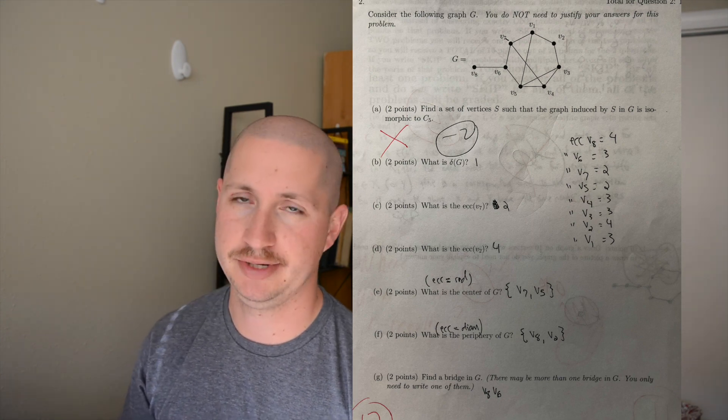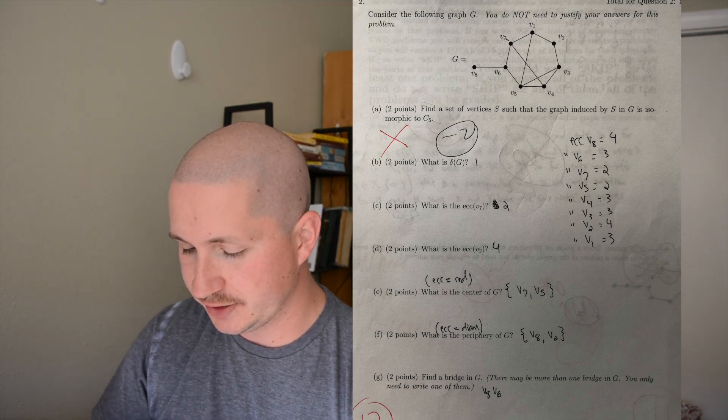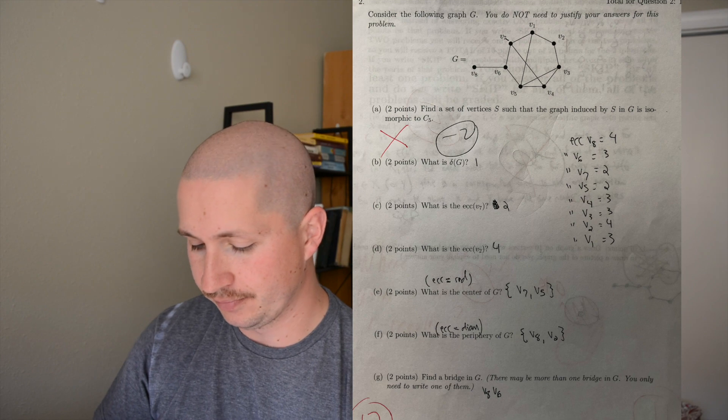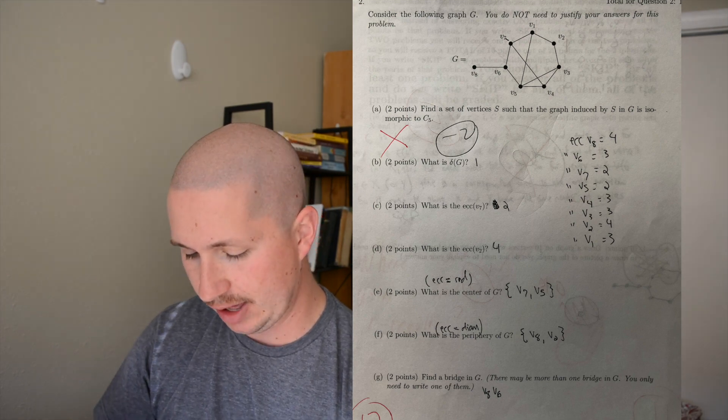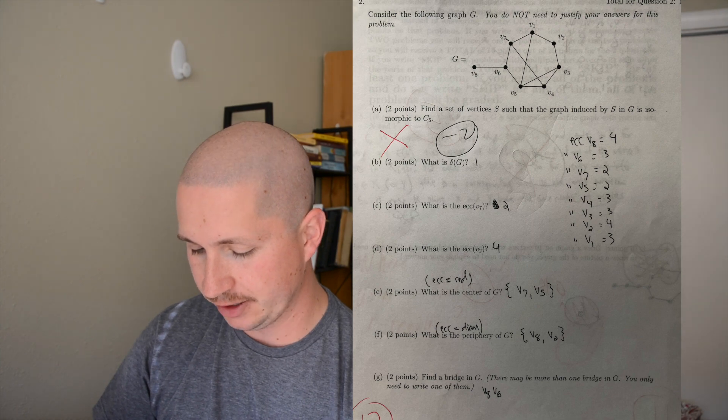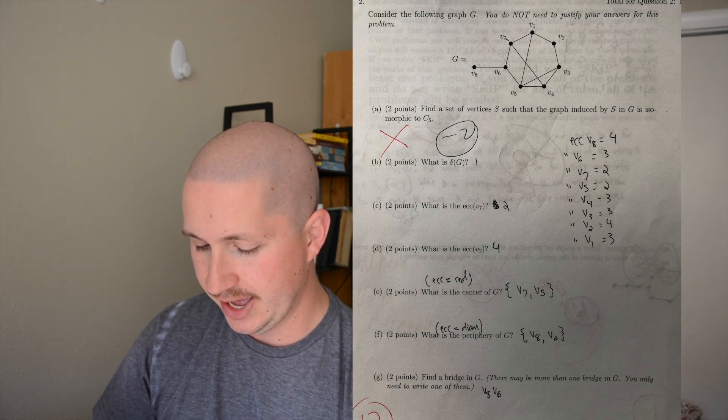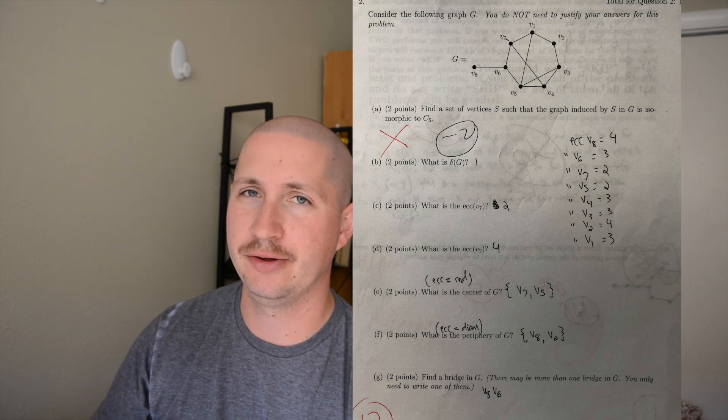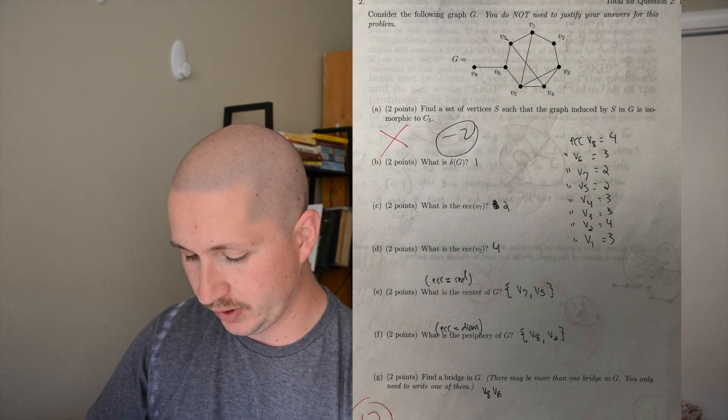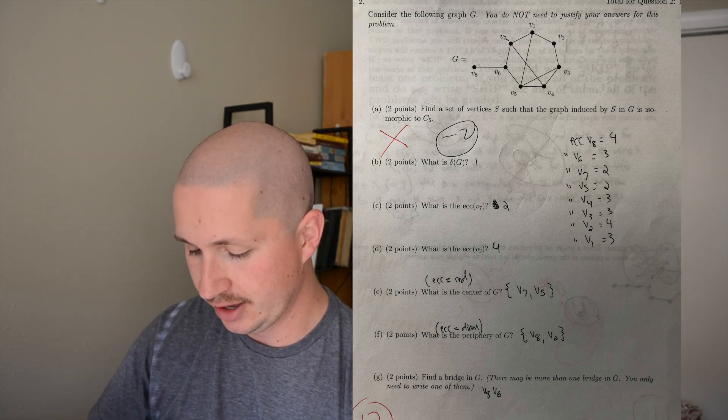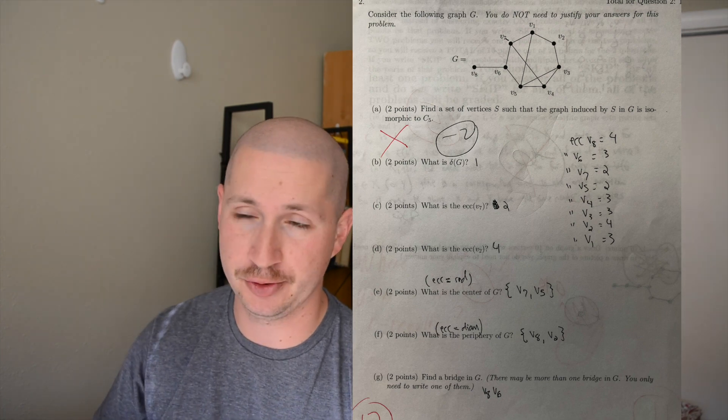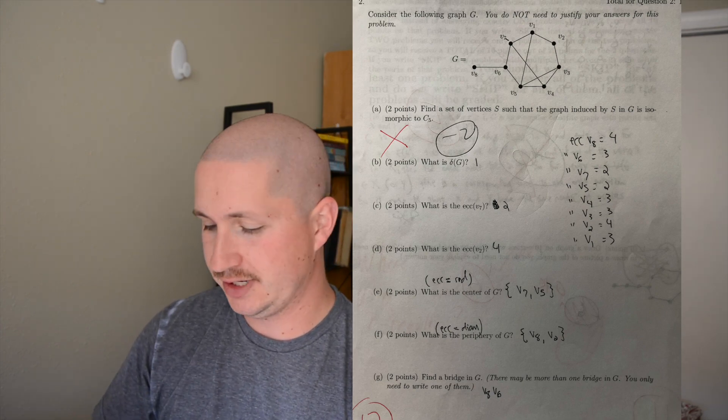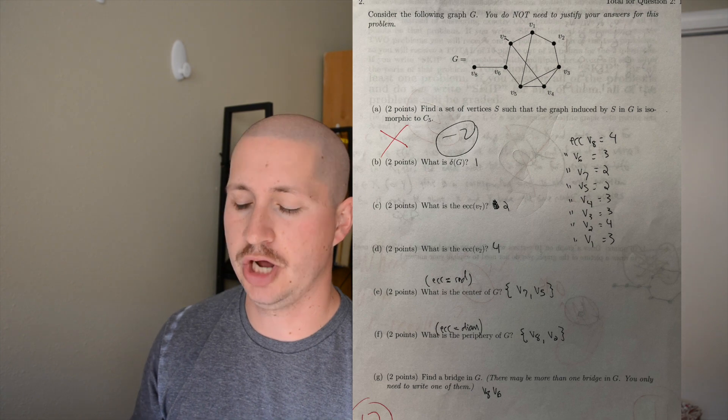So I skipped it. Then we got what's the little delta of G? So that's the minimum degree value found in the graph. Eccentricity is just another definition. Then we have to find the center of G, which is just a list of vertices whose eccentricity is equal to the radius. Eccentricity is the longest path found from one vertex to another in a graph. Then we have the periphery of G, which is the vertices whose eccentricity is equal to the diameter of the graph, which is the largest eccentricity value.